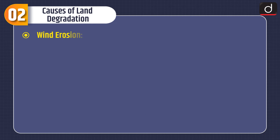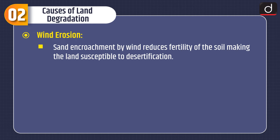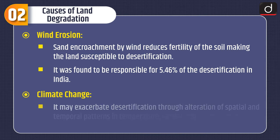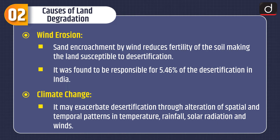Fourth is wind erosion. Sand encroachment by wind reduces the fertility of the soil, making the land susceptible to desertification. It was found to be responsible for 5.46% of desertification in India. And climate change may exacerbate desertification through alteration of spatial and temporal patterns in temperature, rainfall, solar radiation, and winds.